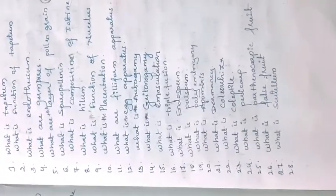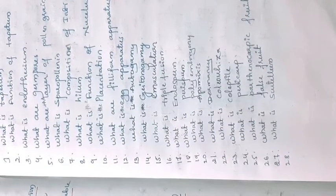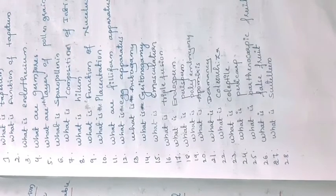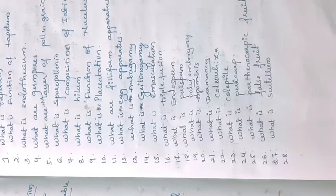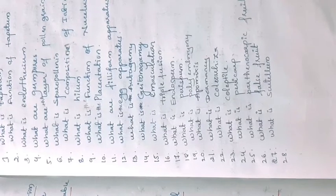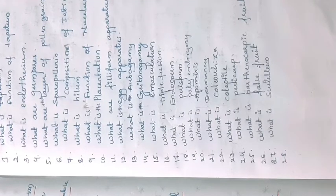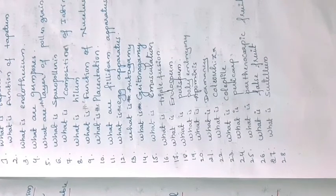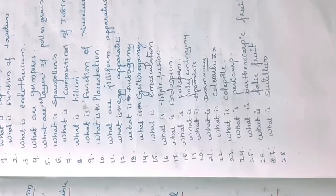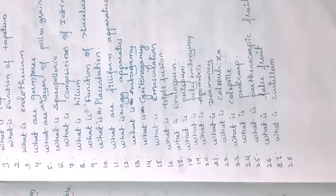What is autogamy? Autogamy is one type of pollination where the transfer of pollen grains occurs from the anther to the stigma of the same flower. This pollination occurs in the same flower — in the case of a bisexual plant, the pollen grains from the anther transfer to the stigma of the same flower.